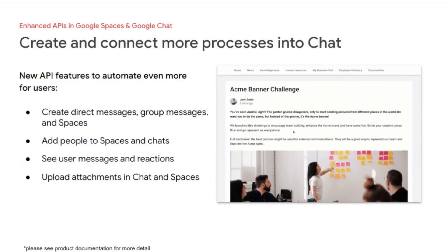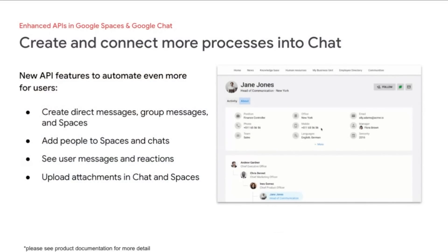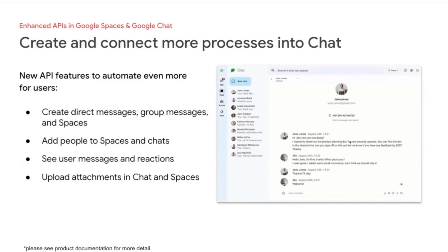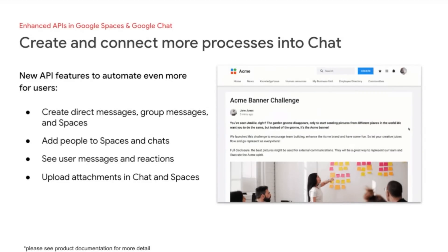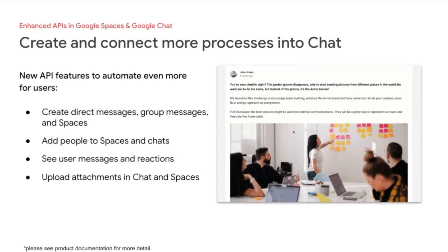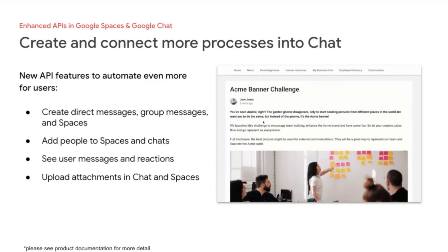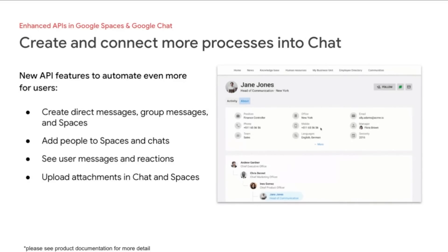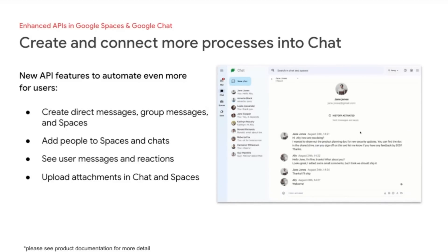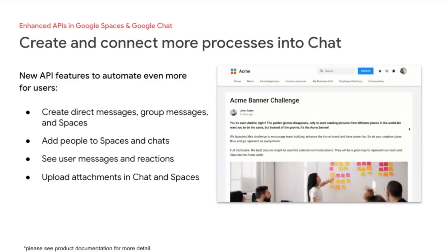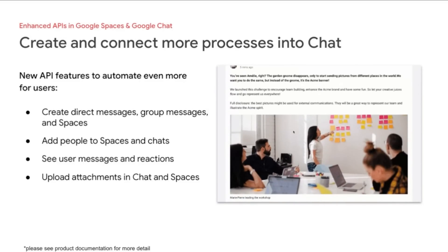We're also investing in expanding the capabilities of our Chat API. Developers can already create spaces and add people to spaces programmatically — PagerDuty is leveraging this today to automatically add people to spaces for instant response. Coming very soon, developers will be able to build apps that can programmatically create one-to-one direct messages or group chats, making your app more interactive and relevant to users. These new APIs will also allow apps to read and write messages programmatically, including message content, attachments, and reactions. Our partner LoomApps is taking advantage of this — employees will be able to launch a private Google Chat with another employee directly from LoomApps' user directory. We are excited to see what use cases and integrations you can come up with.